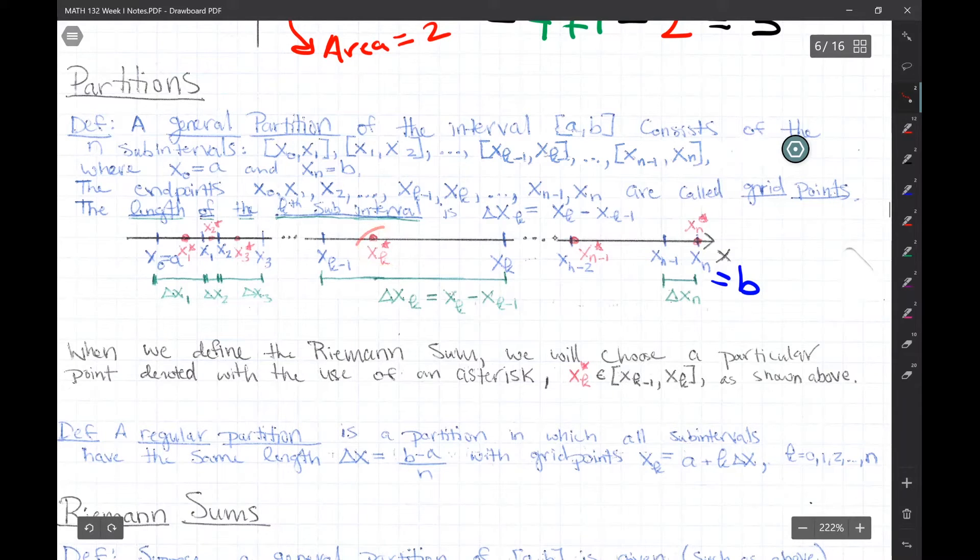Now you see some points here in red. We're going to utilize it later on when we deal with Riemann sums. When we deal with Riemann sums, we're going to have to choose a special point in there, and we could choose it for a general Riemann sum anywhere within a given sub-interval.